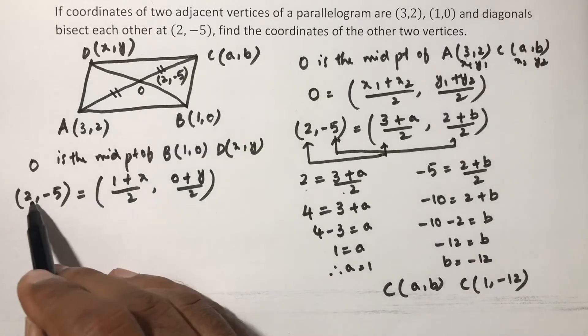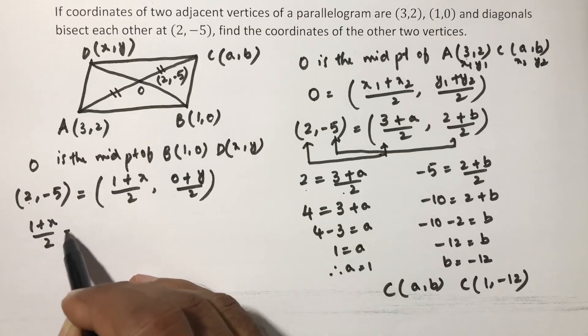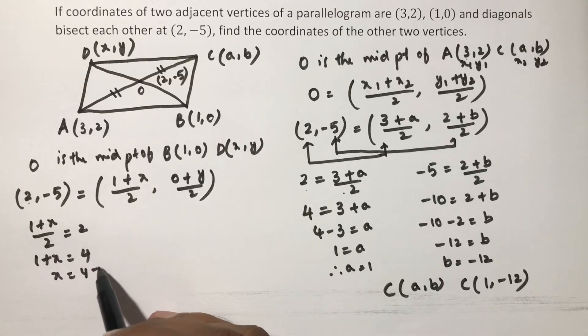Again the same thing, equate abscissa with abscissa. (1+x)/2 is 2, 1+x equals 4, x equals 4 minus 1, so x equals 3.